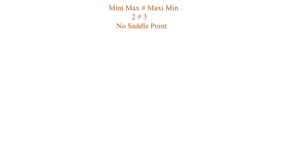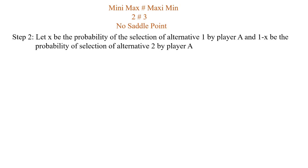We now check whether the given game has a saddle point. If the minimax value equals the maximin value, the game has a saddle point; otherwise there is no saddle point. Here our minimax value is 2 and maximin value is 3. Since 2 ≠ 3, the given game has no saddle point, meaning the game follows mixed strategies. So let's go to the second step.